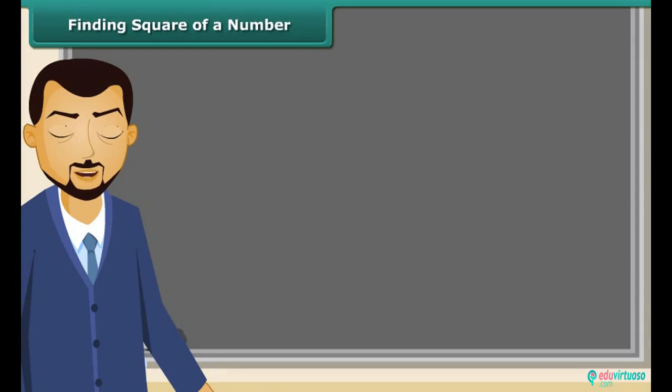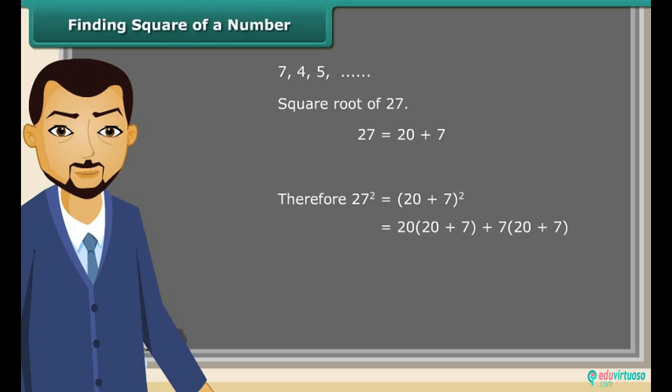We can easily find the squares of small numbers like 7, 4, 5, etc. But is it easy to find the square of 27 so quickly? Let us find how we may find the square root of 27. We know 27 is a sum of 20 and 7. Therefore, a square of 27 is equal to 20 plus 7 whole square, is equal to 20 into 20 plus 7 plus 7 into 20 plus 7, which is equal to 20 square plus 20 into 7 plus 7 into 20 plus 7 square, which is equal to 400 plus 140 plus 140 plus 49, which is equal to 729.